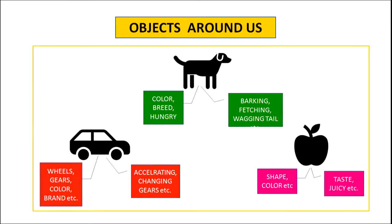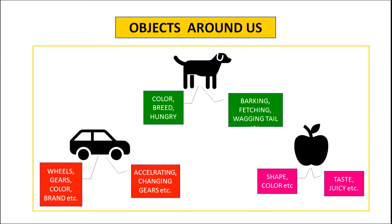If we take an example of a car, the attributes of a car can be wheels, gears, color, brand, etc., and its behavior can be accelerating, changing gears, etc. Now let us take another example of apple. The various attributes of apple can be shape, color, etc., and its behavior can be taste, juicy, etc.